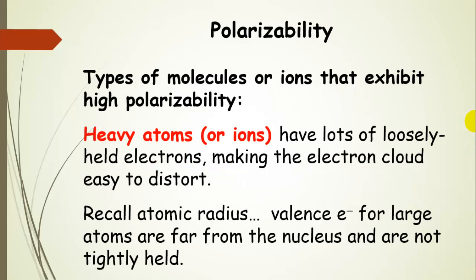Certain categories of molecules or ions have high polarizability. One is heavy atoms or ions — they have lots of loosely held electrons. In a big, heavy atom, the valence electrons are far away from the nucleus, making the electron cloud easy to distort. If you bring a charge near it, the electrons are not held tightly, so the cloud moves easily.